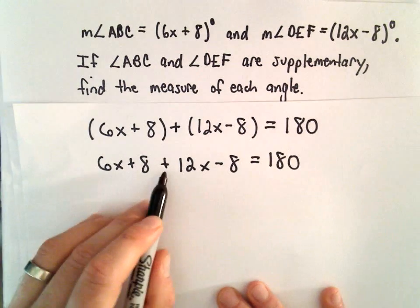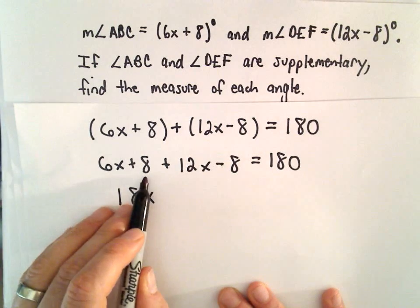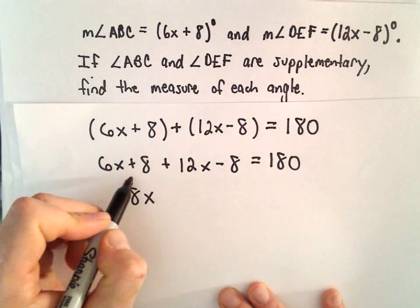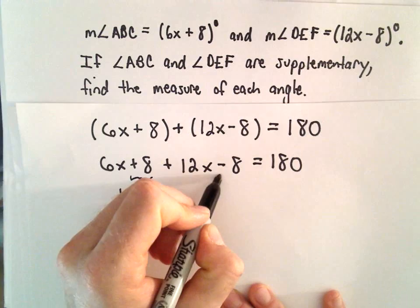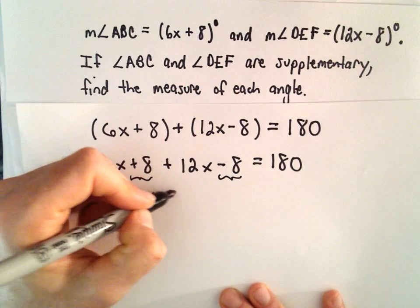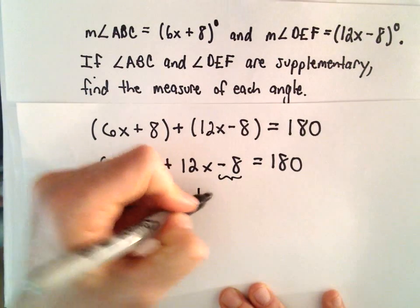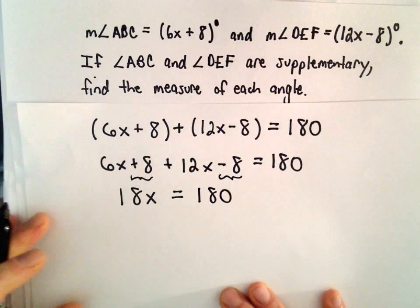So 6x plus 12x - that'll give us 18x. We have positive 8 and negative 8, so positive 8 minus 8 is simply 0. So we're left with 18x on the left side, and we still have our 180 left over on the right side.